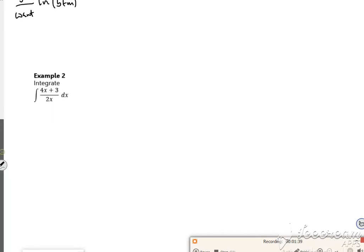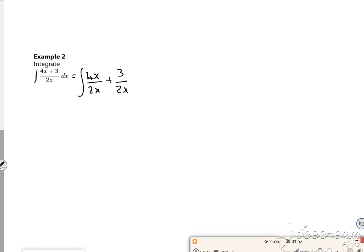Right, so this one, it's kind of upside down, so it's not a log. So I have to split it as two fractions. So the 4x over 2x becomes a 2, then I've got 3 over 2x. Don't forget my dx's.